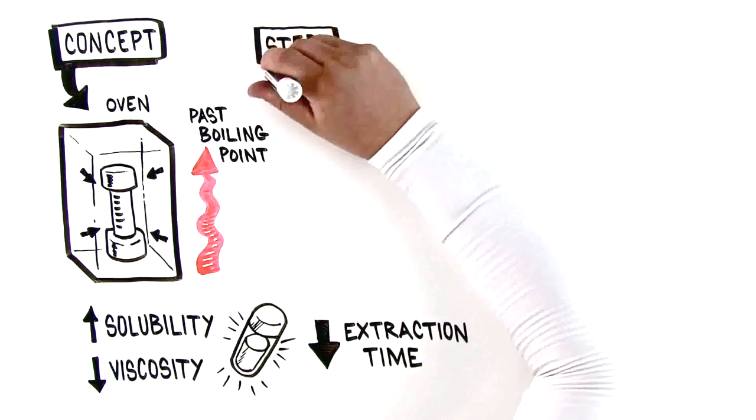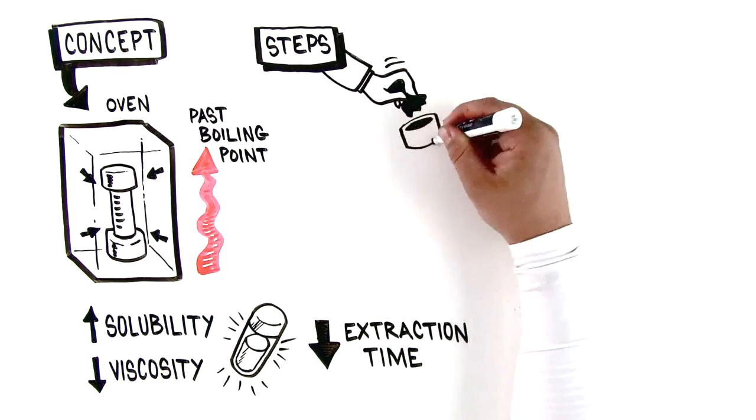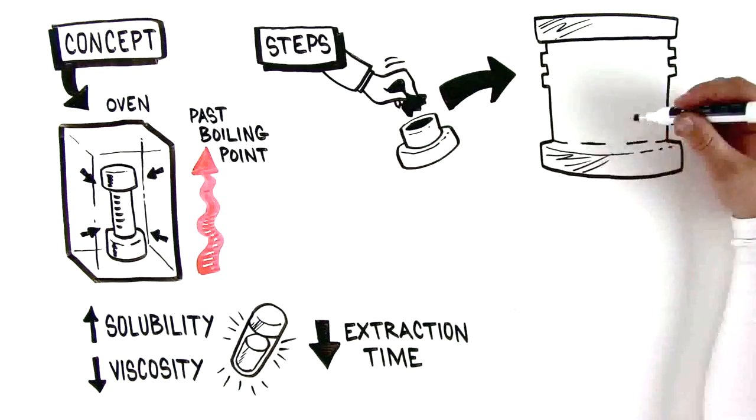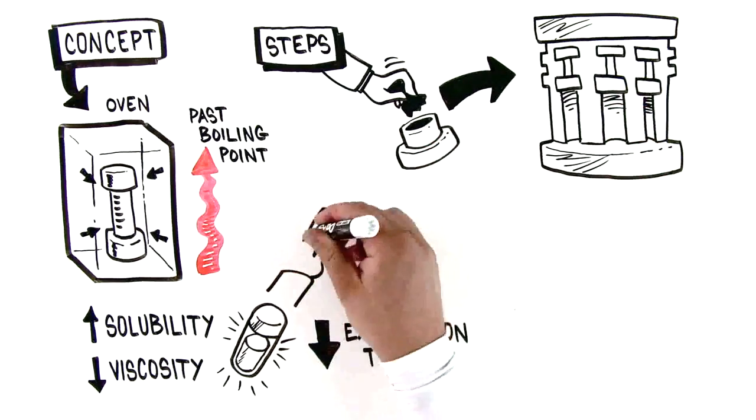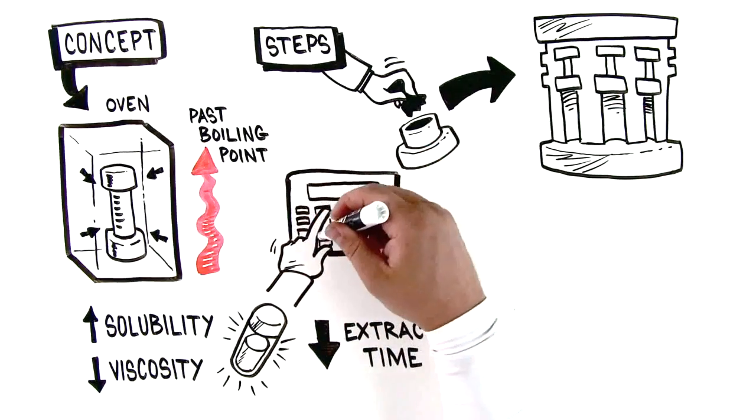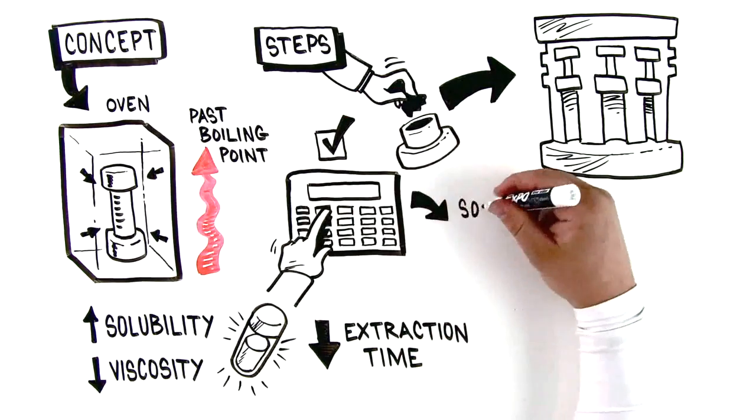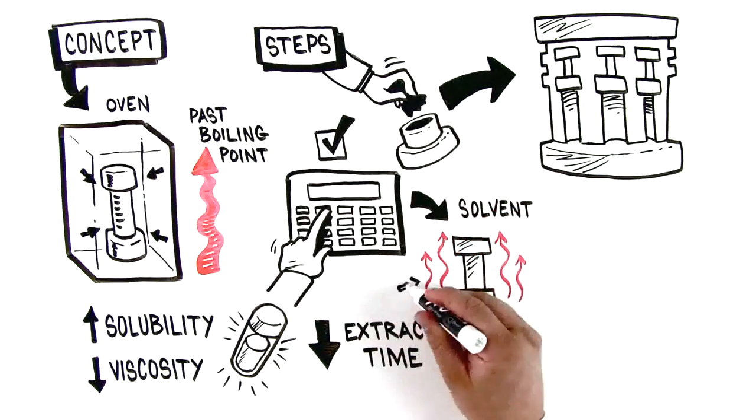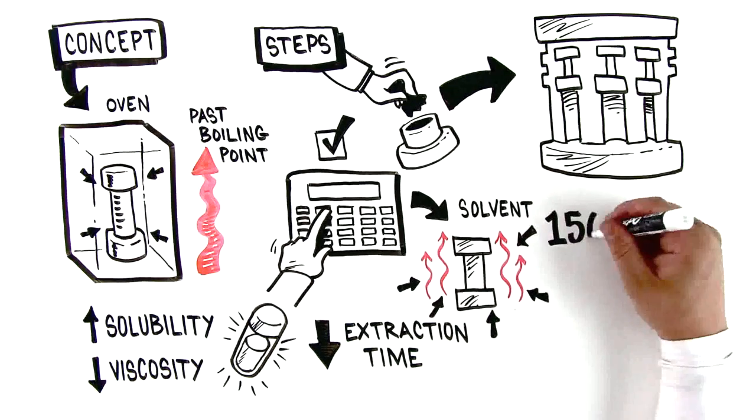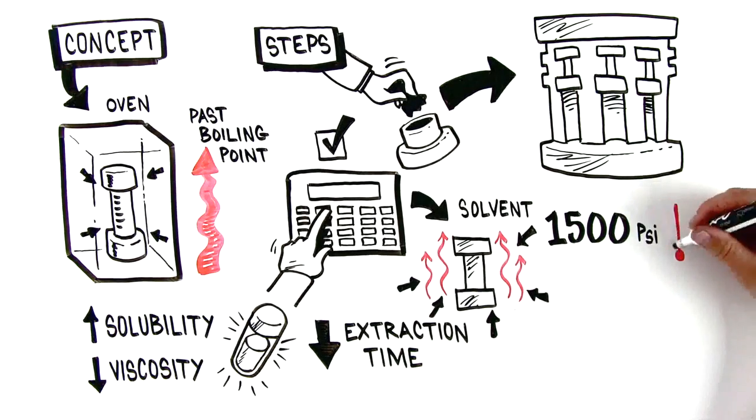Here are the steps. Add the prepared sample to the extraction cell and place the cell into the carousel. Select a pre-programmed extraction method and the system will automatically begin the extraction. The system fills the cell with solvent, heats, and pressurizes, keeping a steady 1,500 psi and desired temperature.